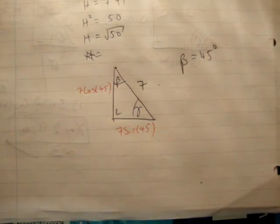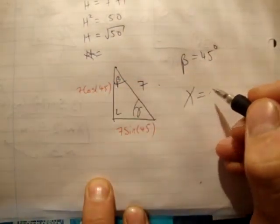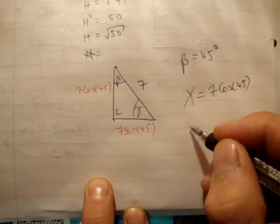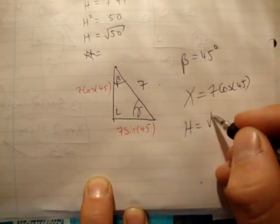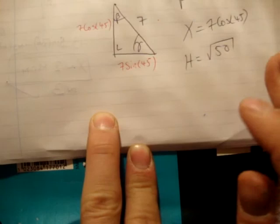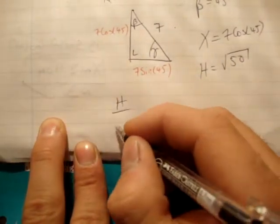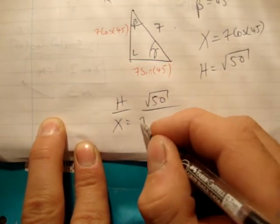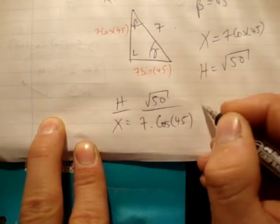So the ratio of x to h, we know at this stage that this side here is x. x is equal to 7 cos 45. We know that h is equal to root 50. With me so far? So therefore h over x is equal to root 50 over 7 cos 45. Equals what?